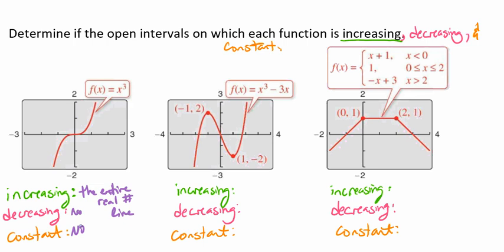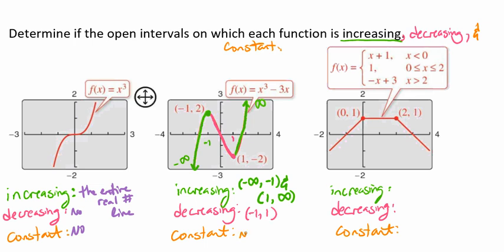Looking at our second graph, the function is increasing from negative infinity up to negative 1. Then it decreases from negative 1 to 1. Then it increases again from 1 to positive infinity. So we write: increasing on (negative infinity, negative 1) and (1, infinity), and decreasing on (negative 1, 1). There are no constants here.